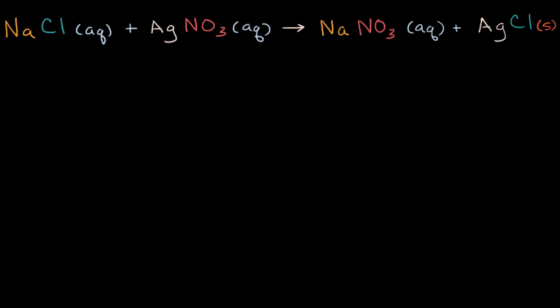What we have here is a molecular equation describing the reaction of some sodium chloride dissolved in water, plus some silver nitrate also dissolved in water. They're going to react to form sodium nitrate, still dissolved in water, plus solid silver chloride.